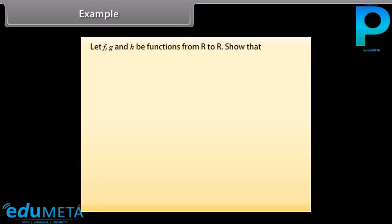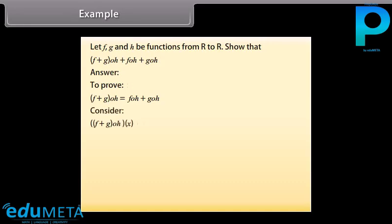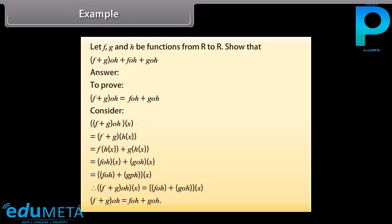Example: Let f, g, and h be functions from R to R. Show that (f + g)∘h = f∘h + g∘h. Answer: To prove (f + g)∘h = f∘h + g∘h. Consider (f + g)∘h(x), which equals (f + g)(h(x)). On solving we get (f + g)∘h = f∘h + g∘h. Hence proved.